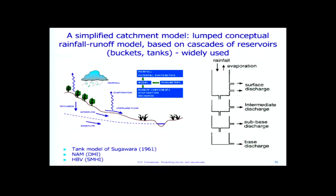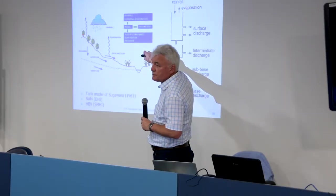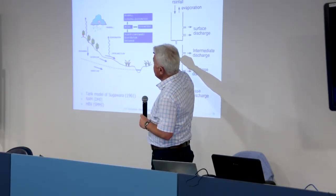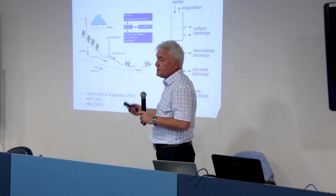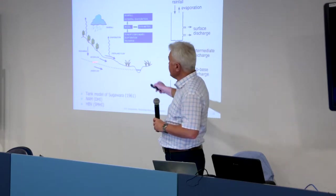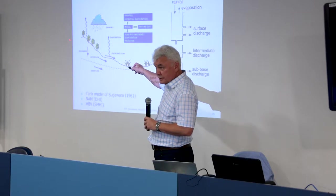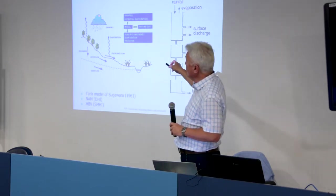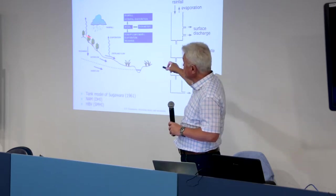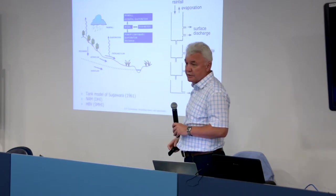So the model presents a catchment as a set of tanks. So if we look at the catchment, it's a cross-section like this. Rainfall is the input, and what is this arrow going up? Yes, evaporation, but also transpiration. So it's evapotranspiration. Sometimes rainfall minus evapotranspiration is called effective rainfall.